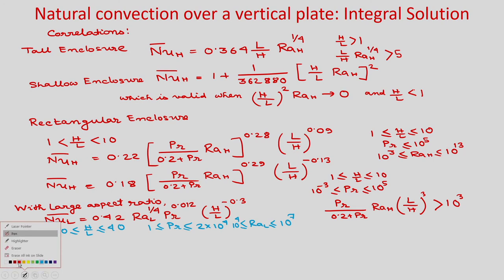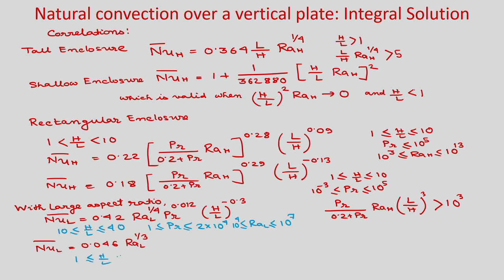For large aspect ratio enclosures (H/L between 10 and 40), where L is the width of the enclosure, the Nusselt number is: Nu_L = 0.42·Ra_L^(1/4)·Pr^0.012·(H/L)^(-0.3), valid for Pr between 1 and 2×10⁴ and Ra between 10⁴ and 10⁷. Another expression for large aspect ratio is Nu_L = 0.046·Ra_L^(1/3), valid for H/L between 10 and 40, Pr between 1 and 20, and Ra_L > 10⁶.